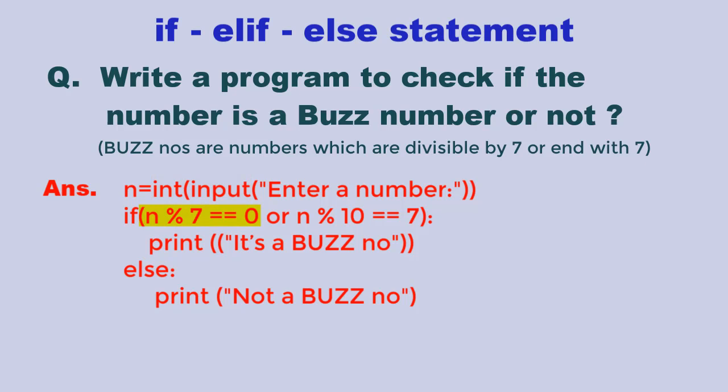And the second expression, we will do modulo 10 to see if the remainder is 7 or the last number is 7. Then we will combine it using the logical operator 'or' and print the output for true and false condition.